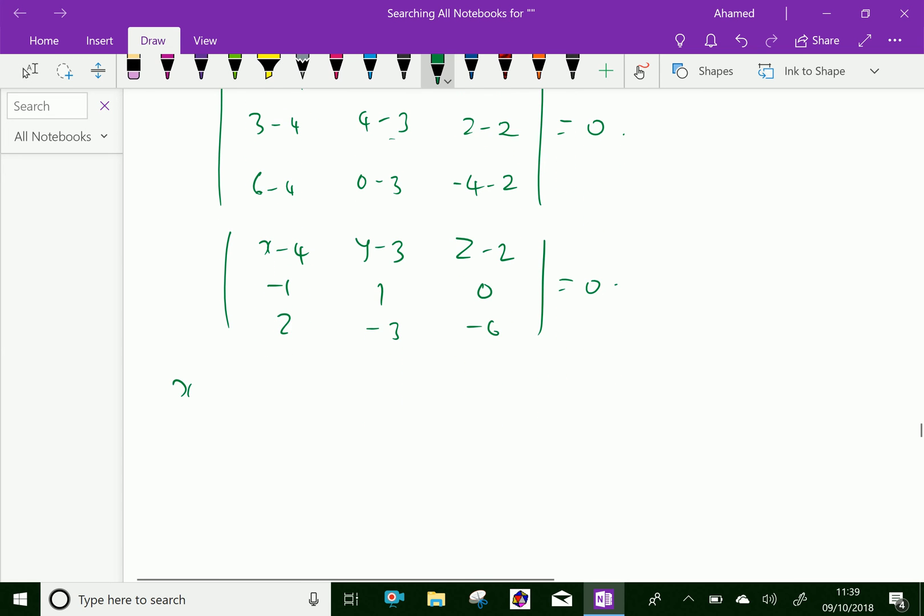We will expand x minus 4. Here 1 into minus 6 is minus 6, and minus 3 into 0, 0. Minus y minus 3, into minus 1 into minus 6 is 6 minus 0.